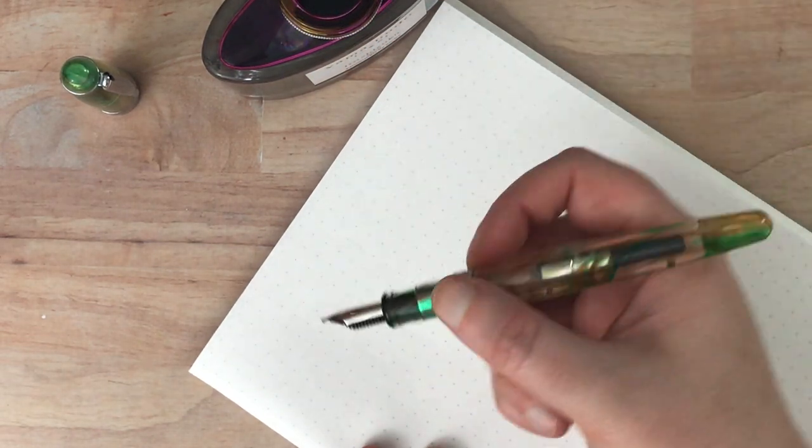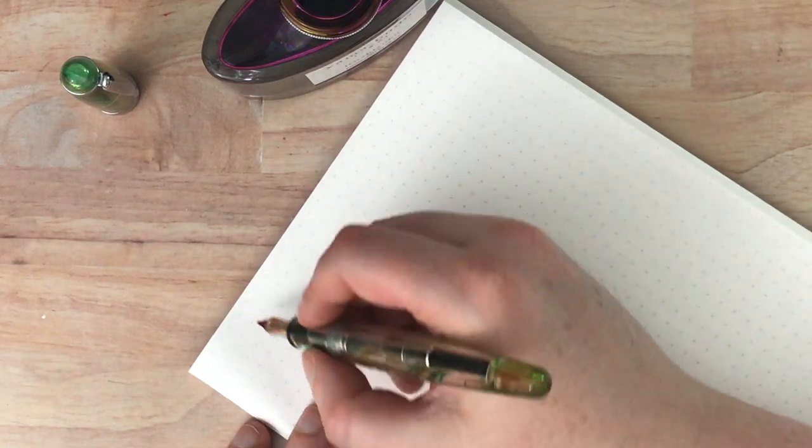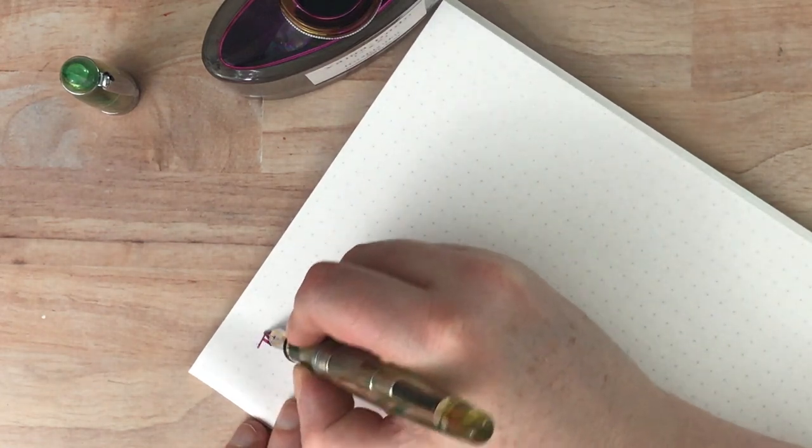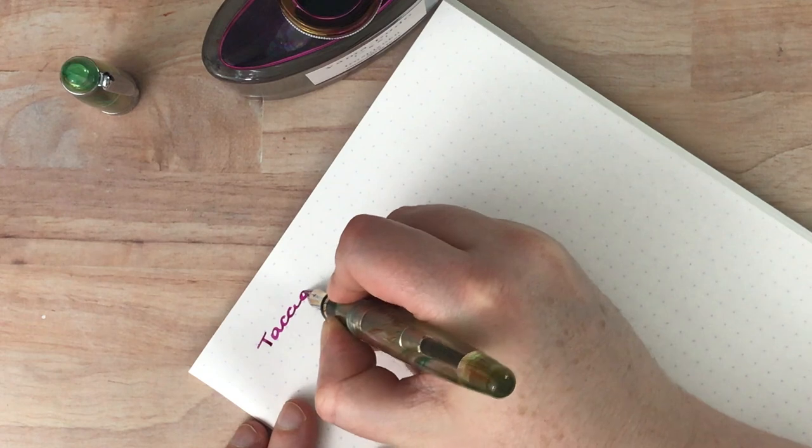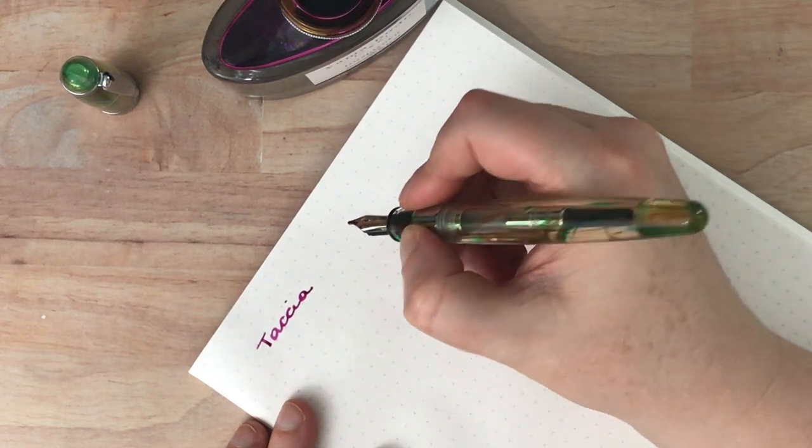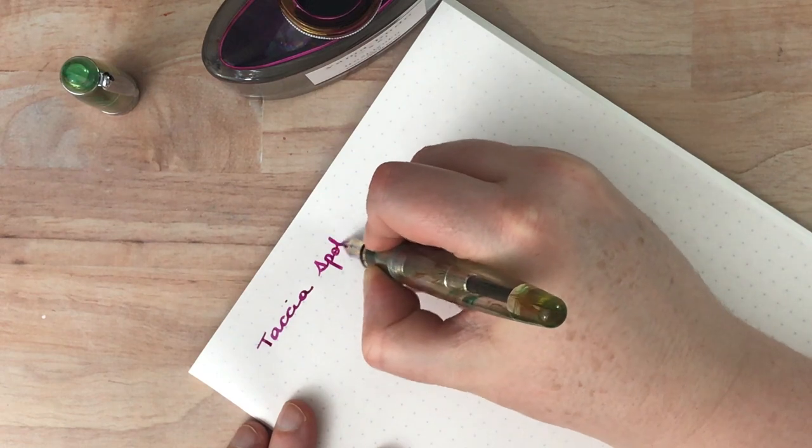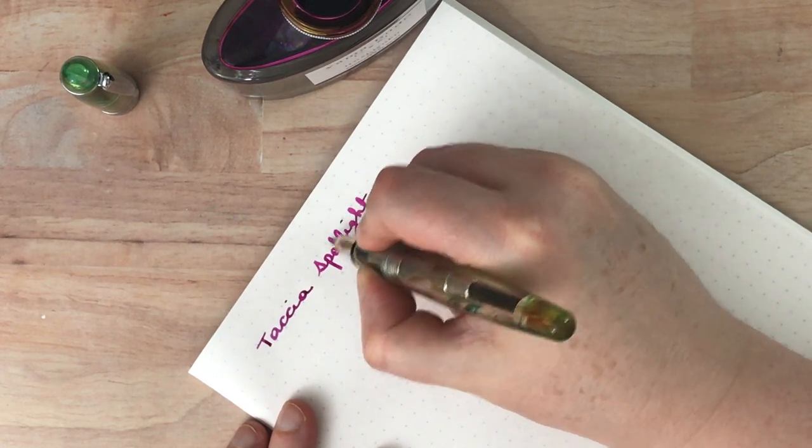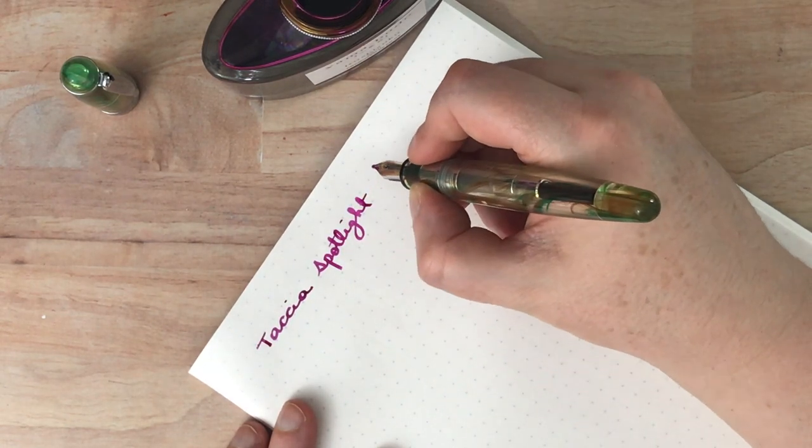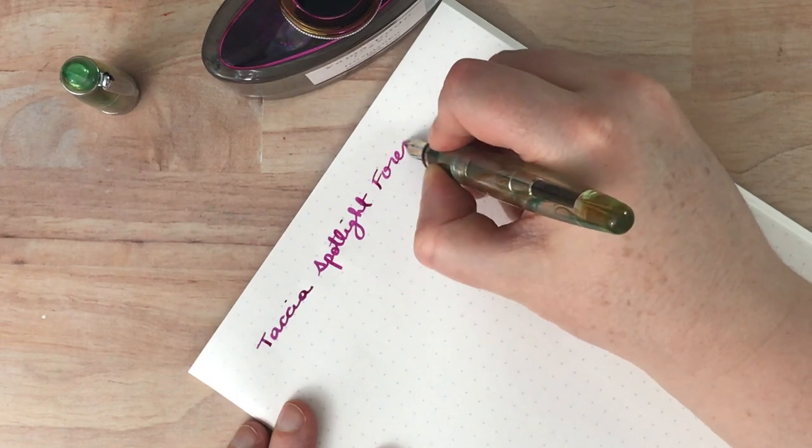So I'm going to dip into my Yamabudo and then this is the Tatchia, which is such a beautiful line. I really love this. This is the Spotlight in Forest Eye is the name of this particular color.